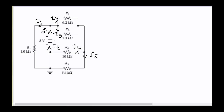You could have assumed the currents differently — everybody can assume whatever they want in these problems, as long as we keep consistency. It doesn't matter if we assume I1 is going into the node as long as I total and they are leaving as I2 and I3. Eventually, if the assumption is wrong in terms of direction, we will get a negative number, as we discussed in class.